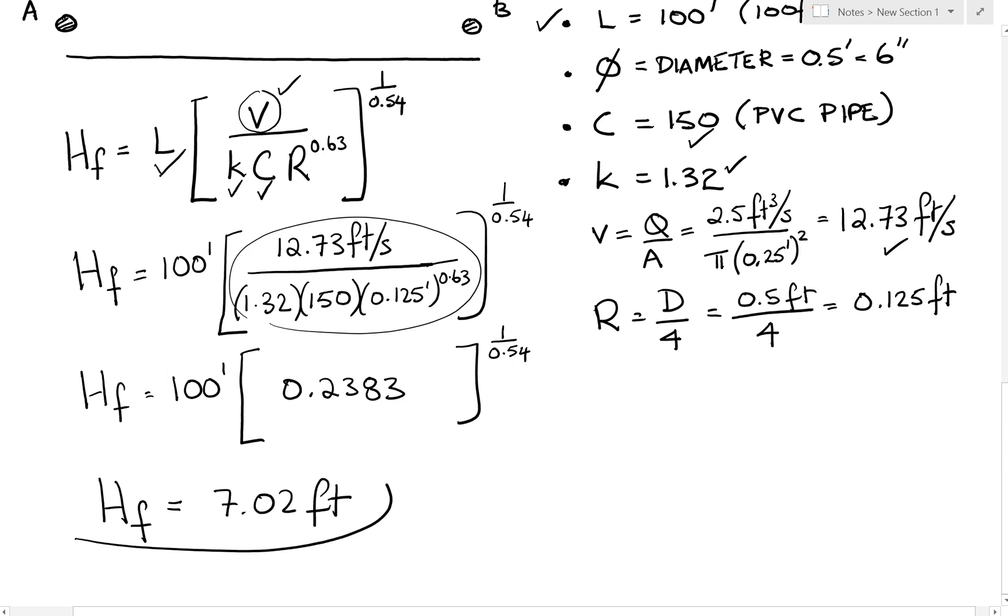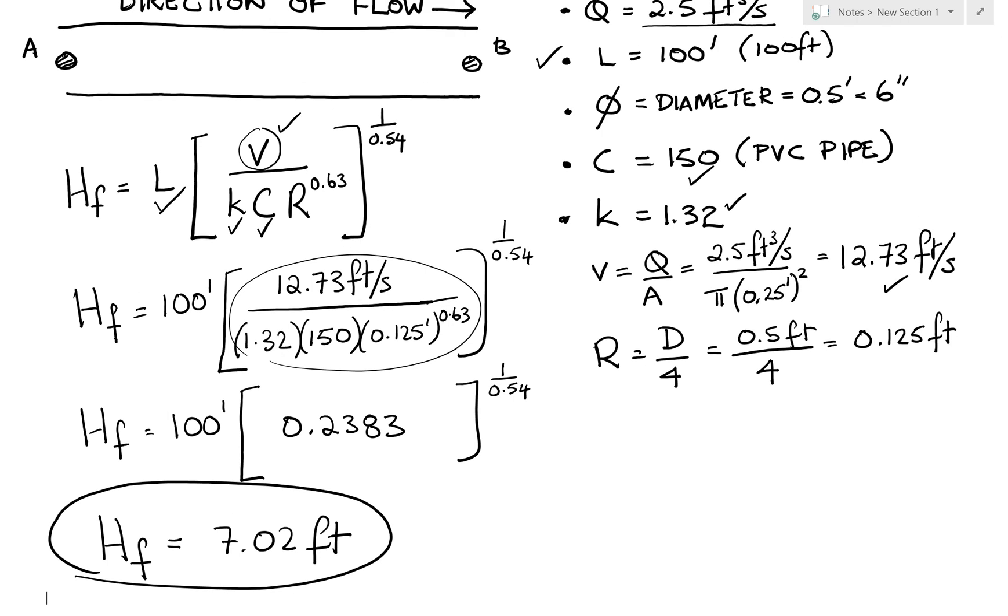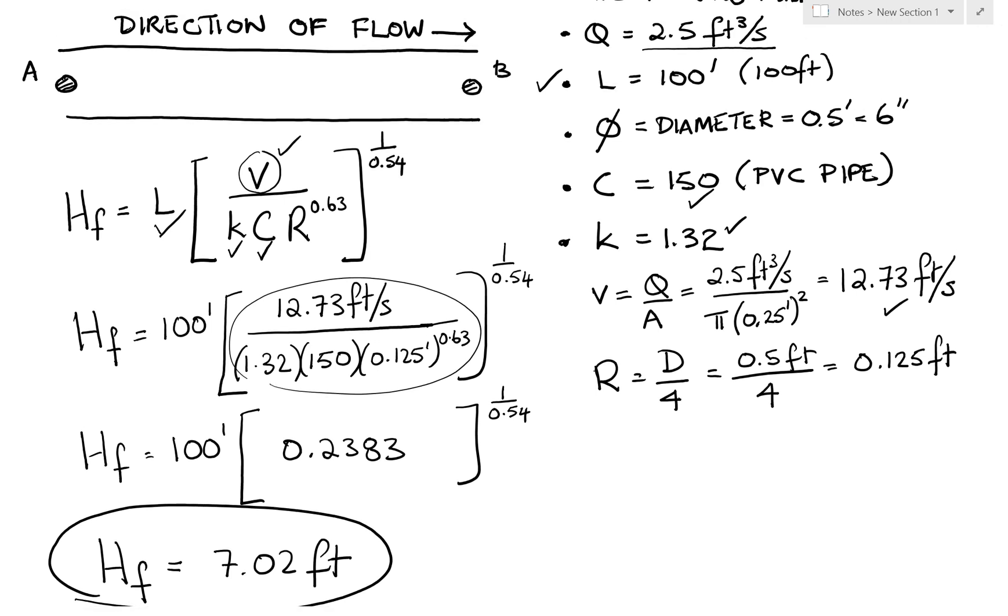And this represents the head loss due to friction. So the head loss due to friction in this pipe going from A to B at this flow rate with that length, with that diameter, and that roughness is 7.02 feet.